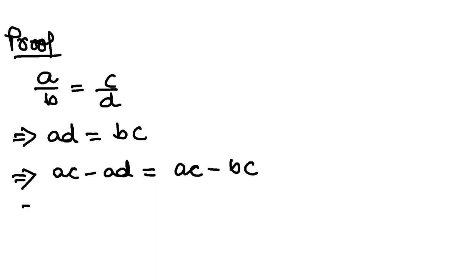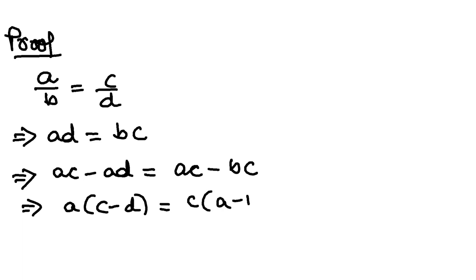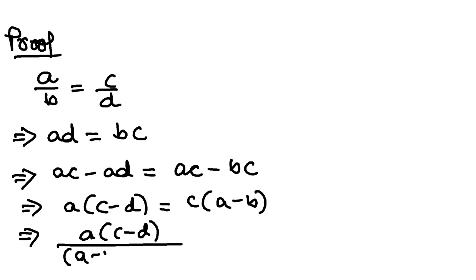What is common from here? 'a' is common, so I will take a common: a(c - d). What is common on the right side? c is common: c(a - b). Now I will divide both left and right side by (a - b)(c - d).